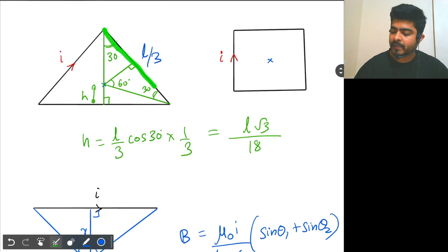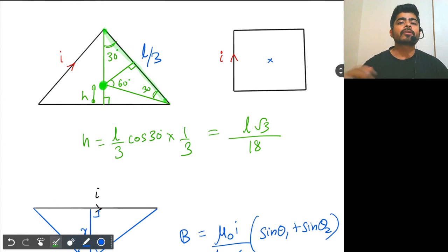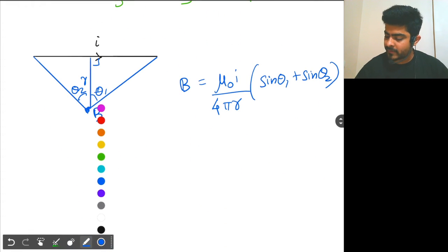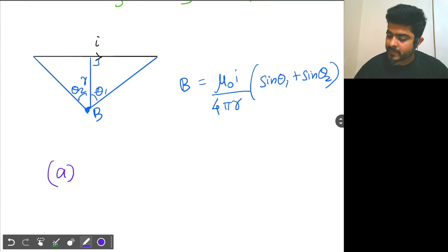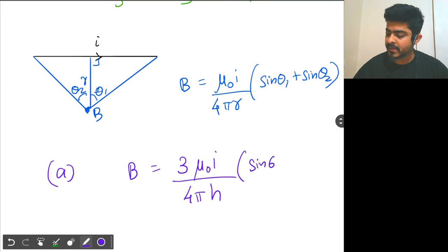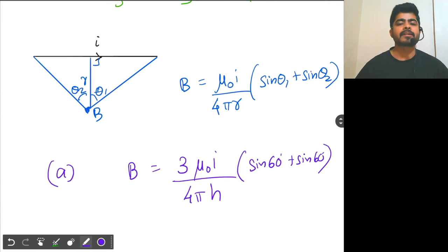Because of this line segment, the field at the center will be μ₀i by 4π times h, where this distance is h, times (sin 60 + sin 60). So now we solve the first case. B will be 3 times μ₀i by 4πh times (sin 60° + sin 60°), because there are 3 wires.